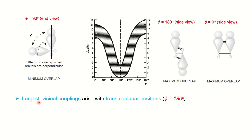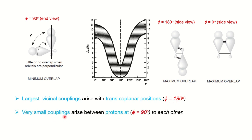The key conclusion is that the largest vicinal coupling arises at the transcoplanar position, which is 180°. The dihedral angle is 180° and so the vicinal coupling is the largest. Very small coupling is observed when the two protons are at 90° to each other. If asked about the Karplus curve, you should draw it and explain its significance, including the orbital picture.